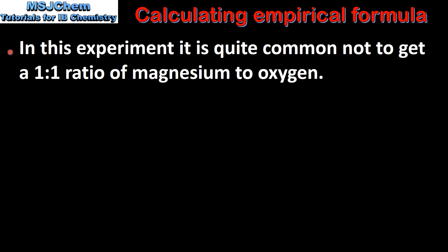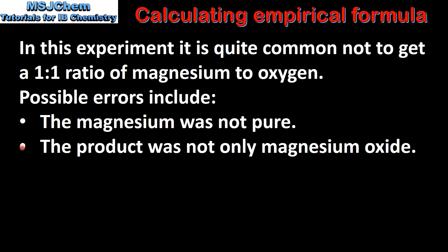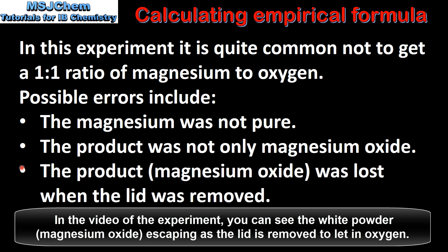In this experiment, it is quite common not to get a 1:1 ratio of magnesium to oxygen. Possible errors include: the magnesium was not pure, the product was not only magnesium oxide, and the product was lost when the lid was removed.